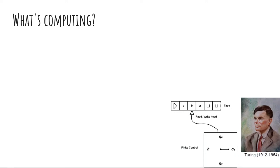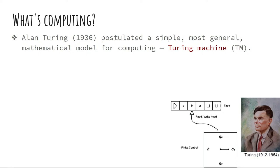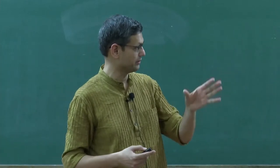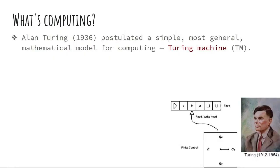The Turing machine has a finite control with states — Q-zero is the start state and H is the halt or final state, with finitely many other states in between. There is a head which works on the tape, and the tape is infinite — think of it as an infinite hard disk. The head moves left or right, and can read or write alphabets on the cell. Based on what it sees and what the transition function is, it takes the next step.